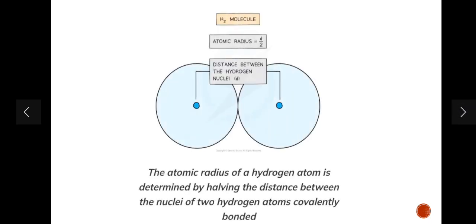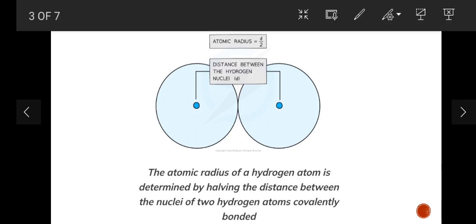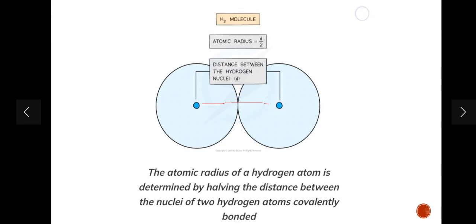The example we are going to consider is the hydrogen molecule. What you have to do first is take two hydrogen atoms and measure the distance between their nuclei. After measuring the distance, you need to halve that distance — that's the radius of one element. The atomic radius of a hydrogen atom is determined by halving the distance between the nuclei of two covalently bonded hydrogen atoms.